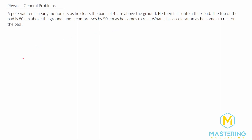It's really helpful to see what's happening. The pole is at 4.2 meters. He's going to come up and hang for just a second motionless, then come over. There is a pad that is 80 centimeters above the ground. It compresses by 50 centimeters, so it ends at 30 centimeters. There are two different distances we'll take into account.